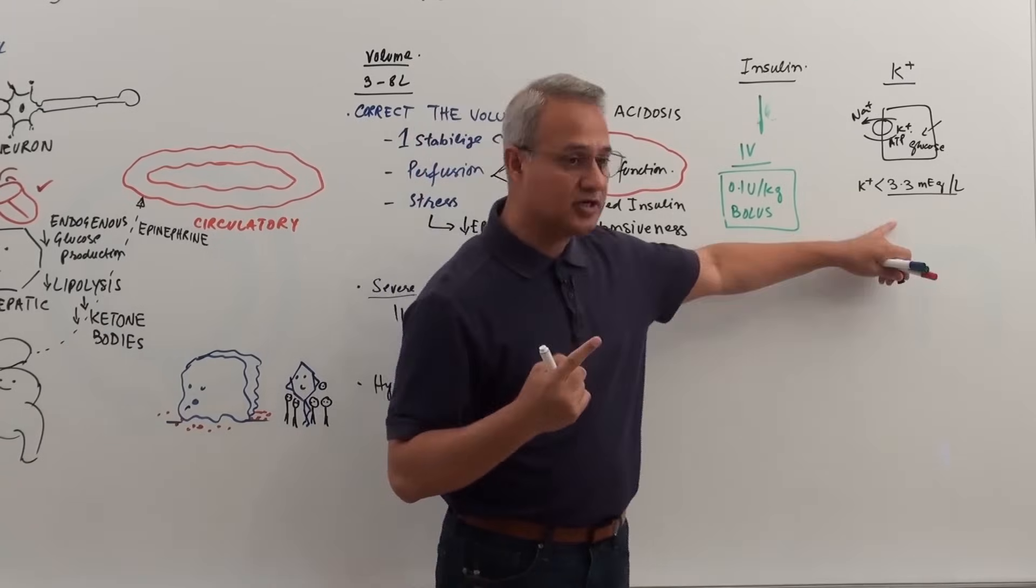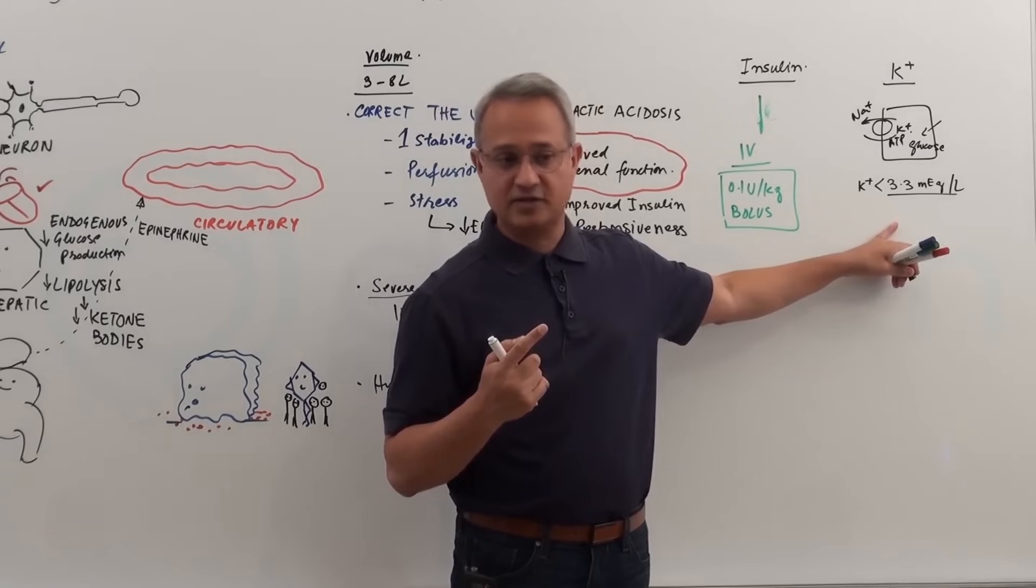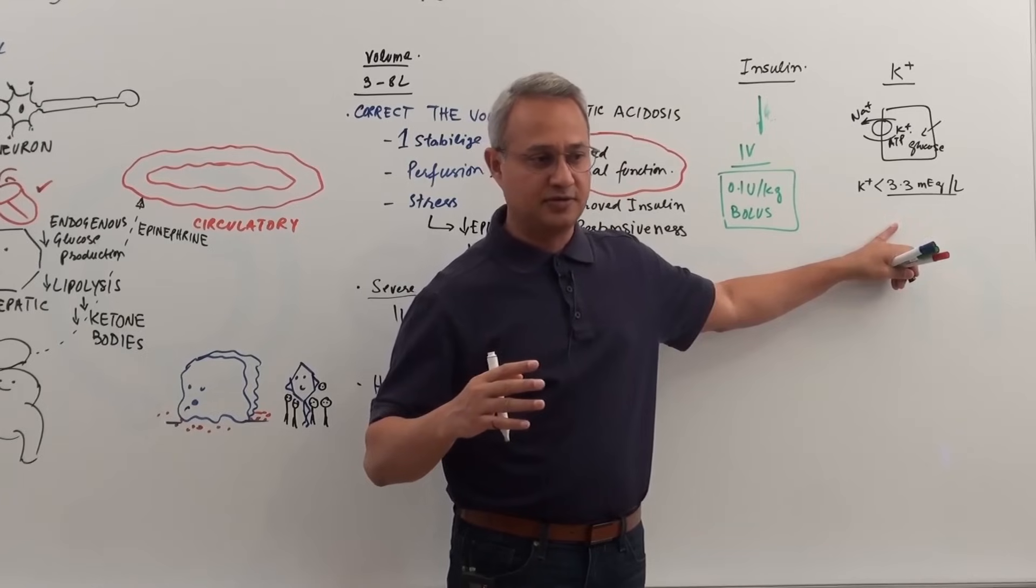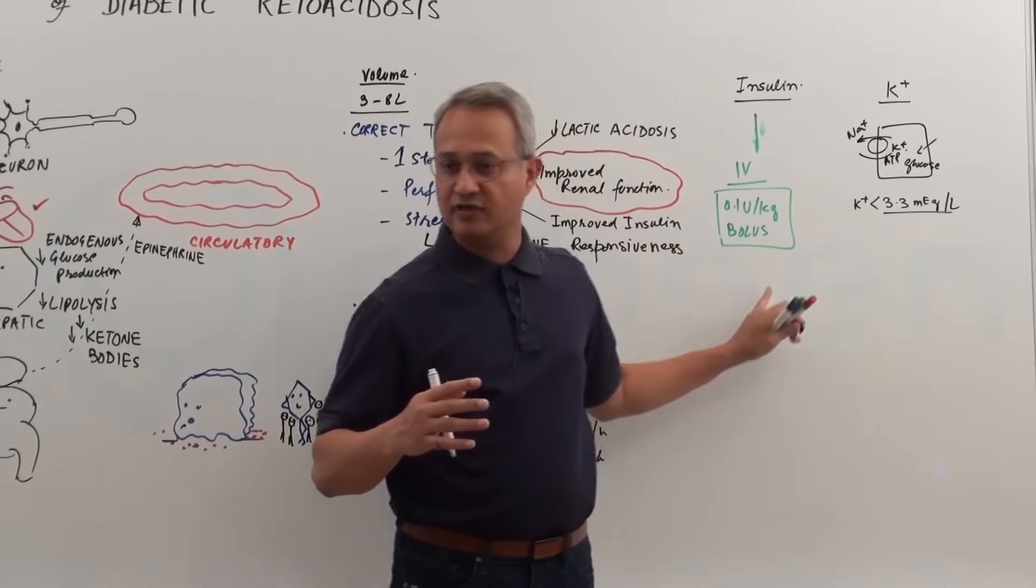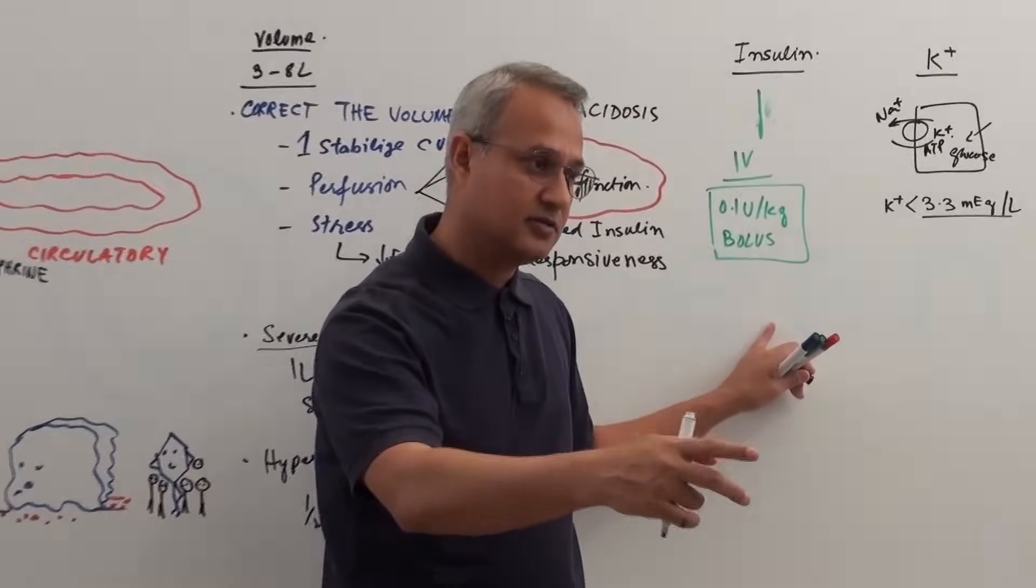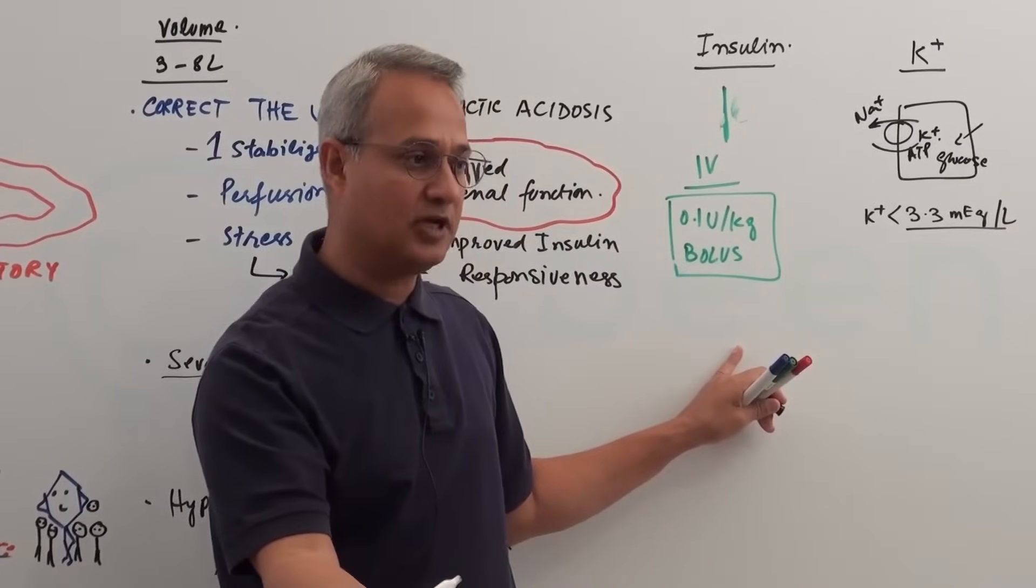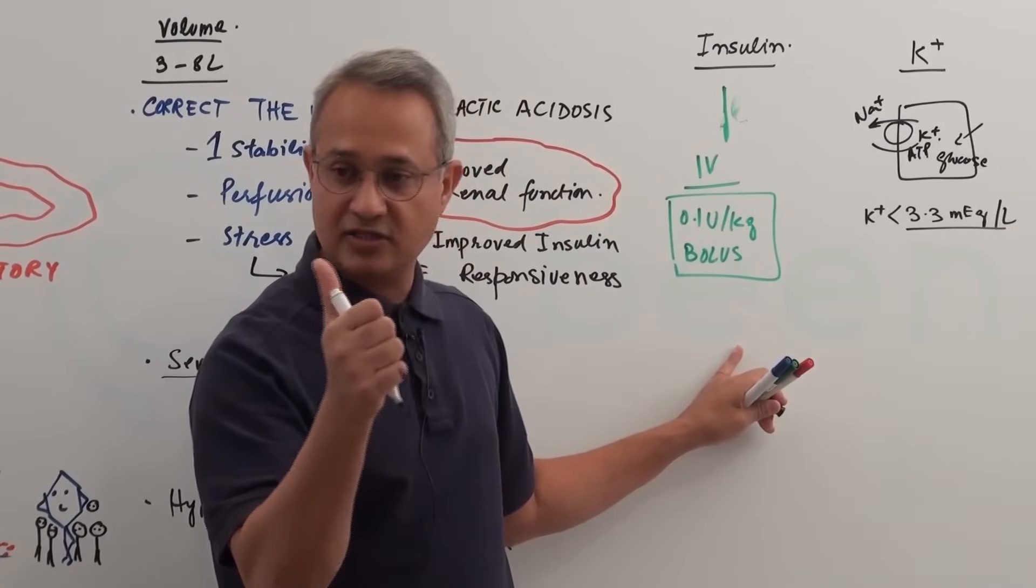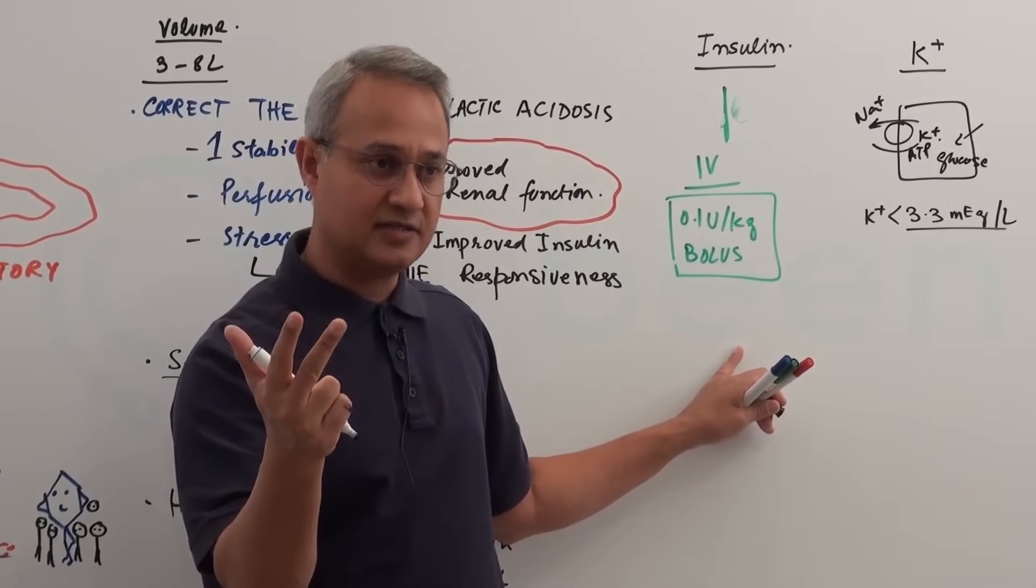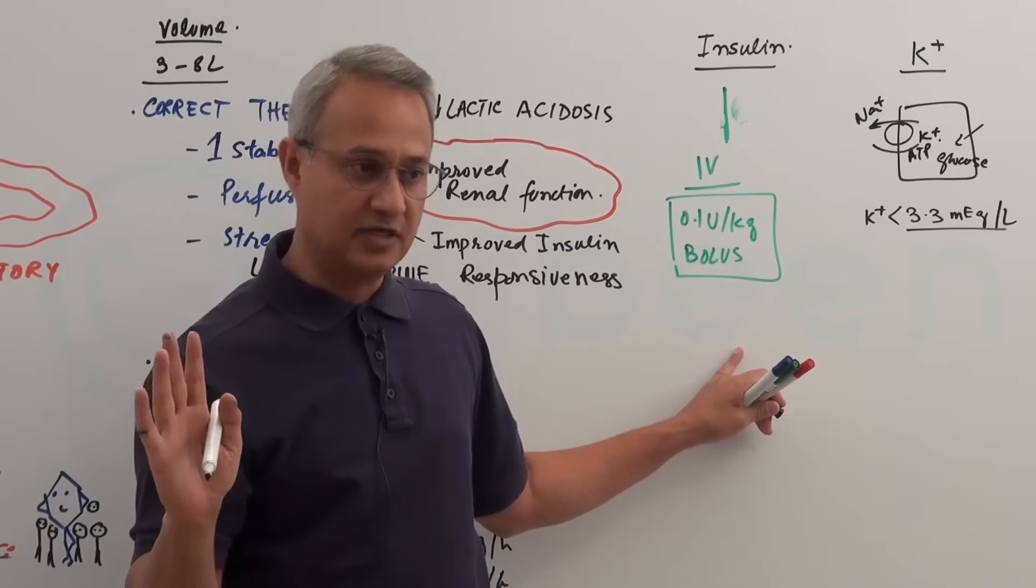Here you are protecting the heart from arrhythmias due to hypokalemia. So in this situation, don't give insulin because insulin is going to aggravate the hypokalemia. It can cause arrhythmia and even cardiac arrest, killing the patient.